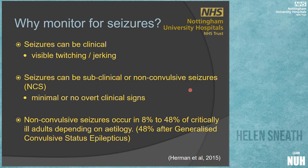Why do we want to monitor for seizures? If a patient is clinically seizing, you don't need a monitor to tell you. Seizures can be clinical - visible twitching, jerking of the body. But equally, seizures can be subclinical, or as we now say, non-convulsive seizures. These are patients with very subtle clinical signs - a tiny bit of facial twitching, subtle eye movements, nystagmus - or there might not be any clinical signs at all that the patient is having a seizure. The only way of finding that out is to record EEG or CFAM.